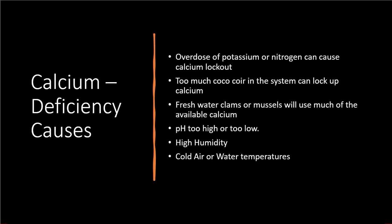If your pH is too high or too low, it can lock out calcium. High humidity is also a factor — if the plant's not able to transpire, it won't be pumping water and minerals up through the plant; it'll be a traffic jam. Cold air and cold water temperatures will also restrict calcium flow — it's less a true lockout and more that it just stops the flow through the plant.